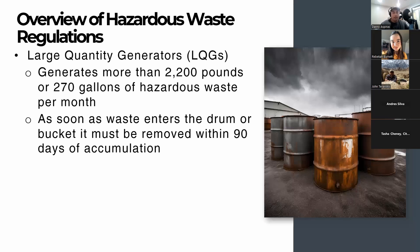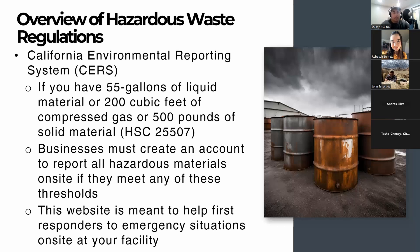If you are any of these quantity generators, there's a very good chance you need a California Environmental Reporting System (CERS) account. The thresholds requiring an account, pulled from Health and Safety Code 25507, are: 55 gallons of liquid hazardous material, 200 cubic feet of compressed gas, or 500 pounds of solid material. If any of those thresholds are on your site, you need a CERS account to report all hazardous materials. First responders use this account to review your facility diagram for entrances, exits, and material storage locations — important especially in a chemical fire where some chemicals don't play well with water.